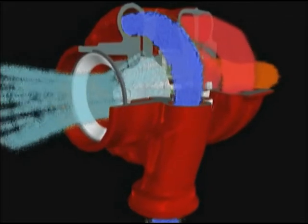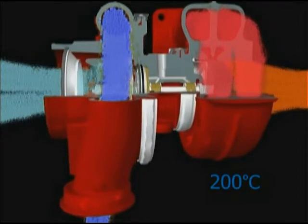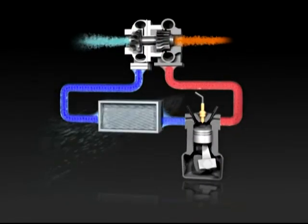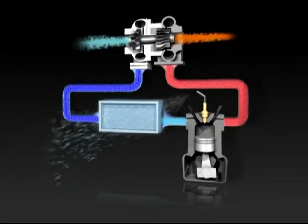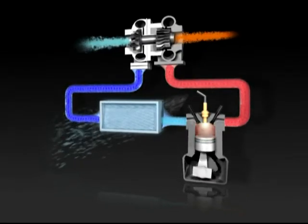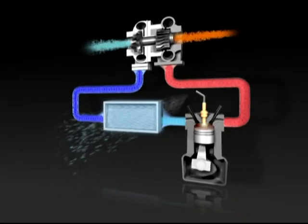Air enters the compressor at ambient temperature, but leaves it at up to 200 degrees C. As air temperature increases, its density decreases, which reduces power. So it's usually passed through a charge air cooler or intercooler, which uses air or water to cool the hot, high pressure air.